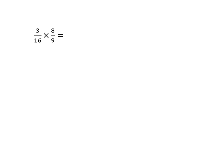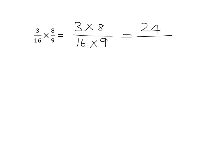Multiplication of fractions is straightforward. If you multiply two fractions together, you multiply the numerators and you multiply the denominators. You can go ahead and just work this out: 3 times 8 is 24, and 16 times 9 — that's a bigger calculation, but if you work it out, you'll see it's 144. So our answer is 24 over 144.